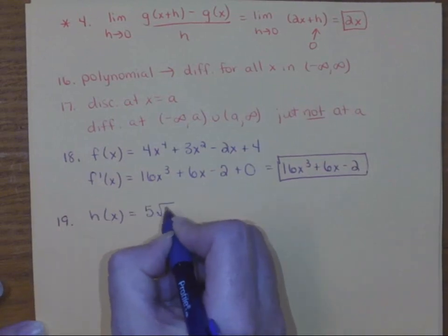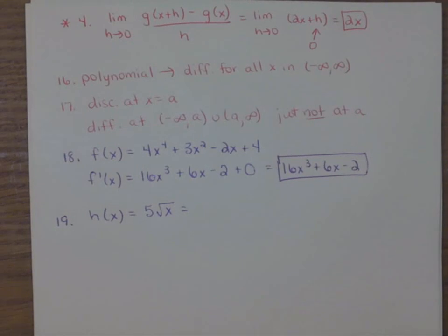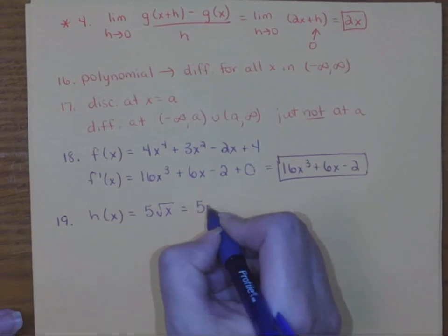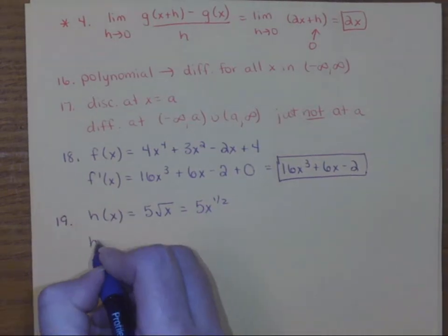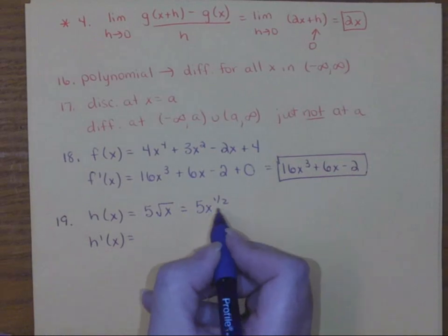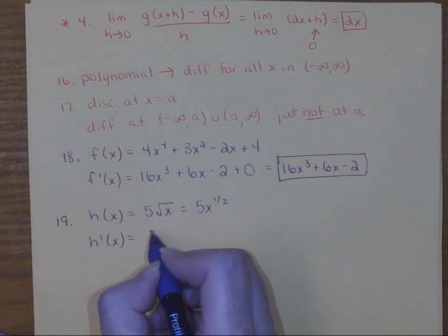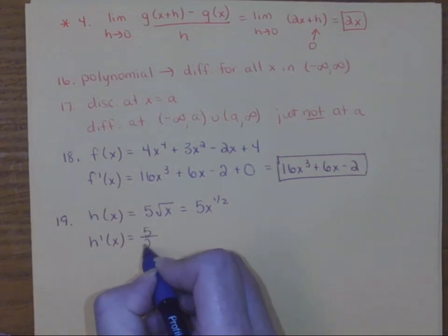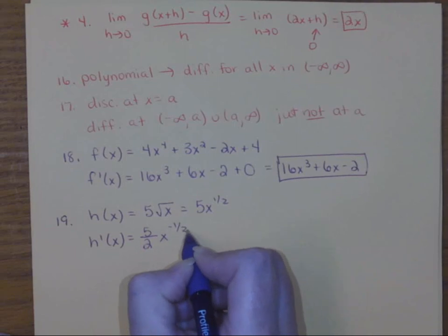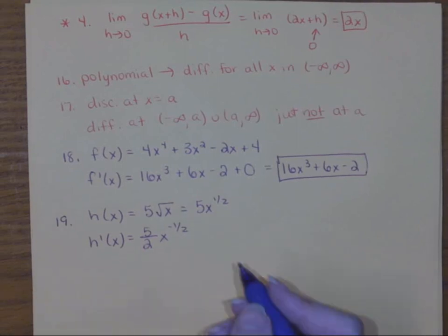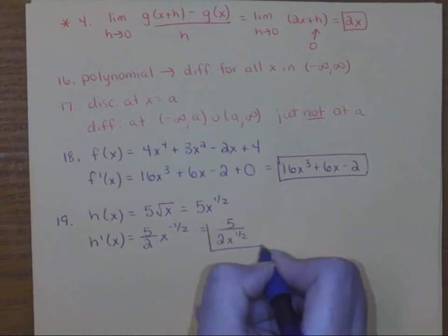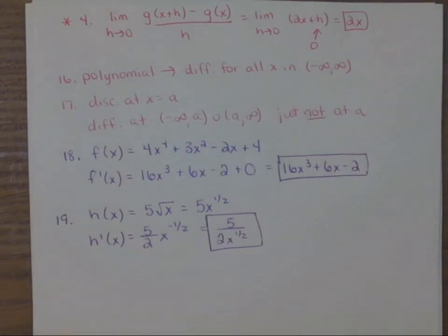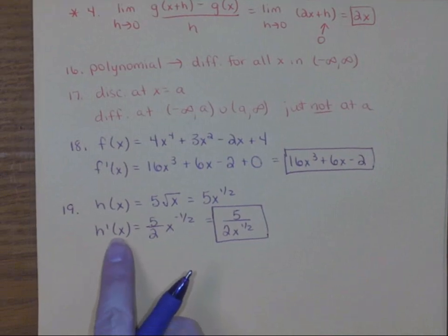Number 19: if I want to take this derivative and use the power rule, I'm going to need to rewrite this. You need to make sure you're really good at this for the test. This is the same as 5 times x to the 1 half. Now when I take the derivative and do the power rule, 5 times 1 half is 5 over 2, and if I reduce the power by 1 it's negative 1 half. I don't want to see negative exponents — that's not proper form — so make sure you rewrite it as a fraction.